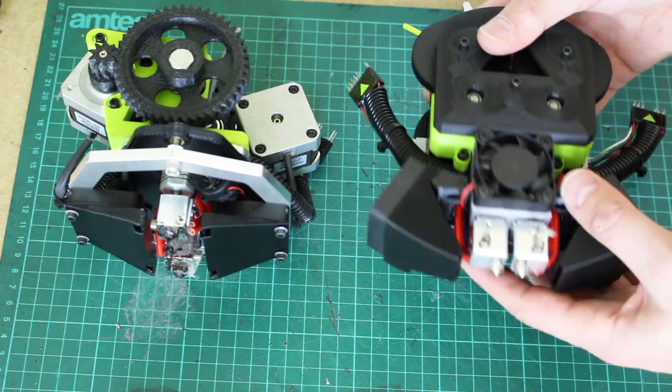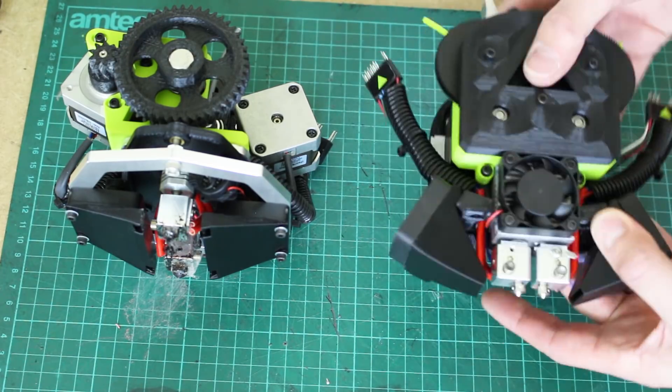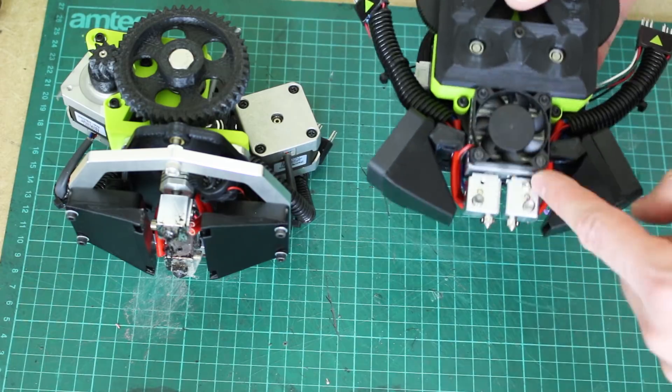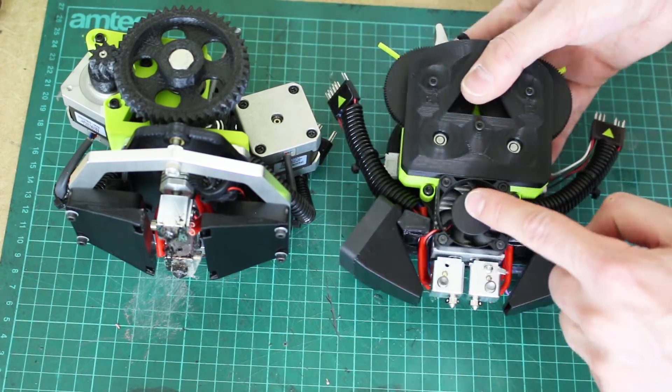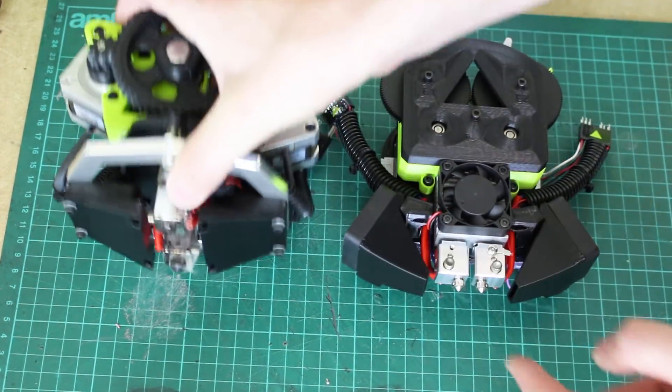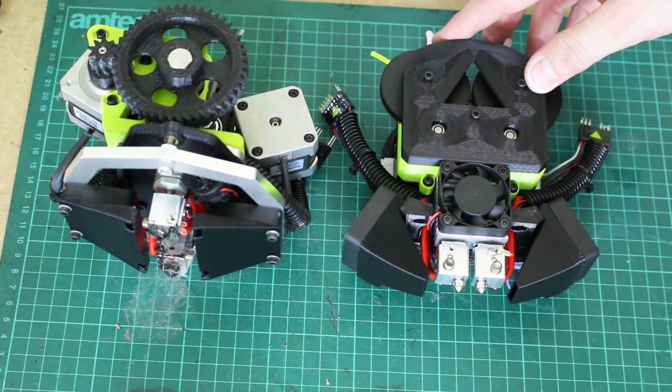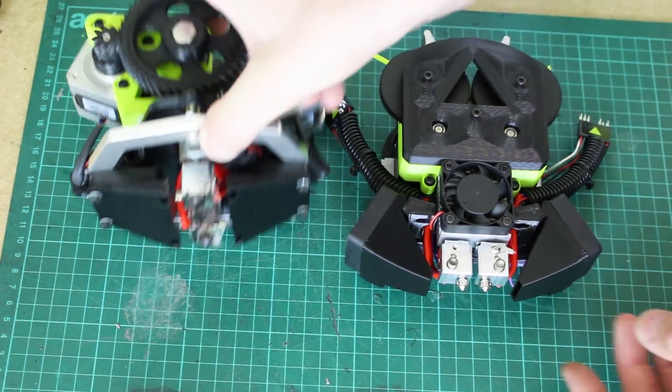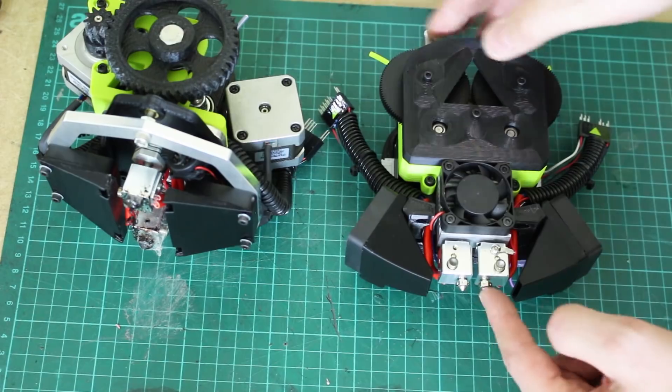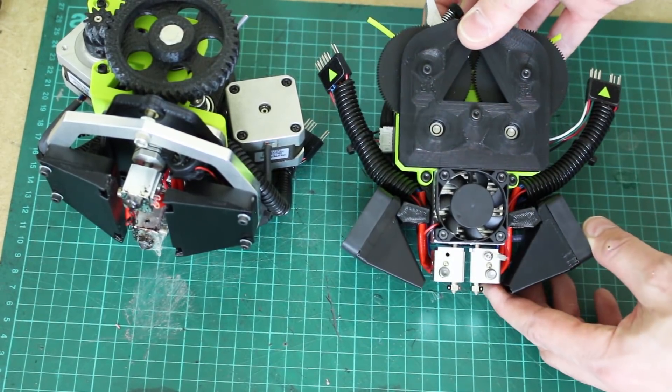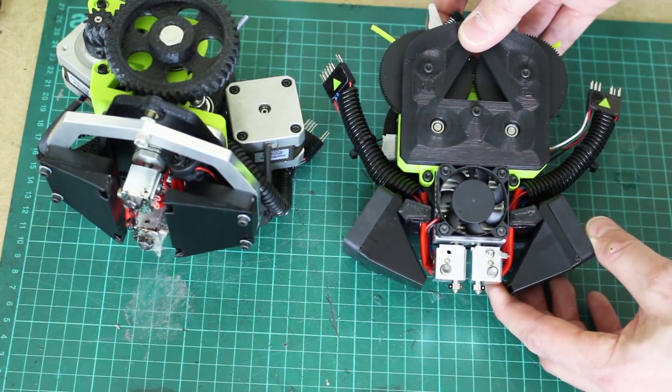And the heater and hot end block there is actually precision engineered out of one piece of metal with both hot ends on and one fan instead of being separate on another plate and everything. So hopefully the calibration is much better. On this one, we had to calibrate the distance. On this one, it should be fixed and precision engineered in the factory. So altogether, it looks like a much better unit.